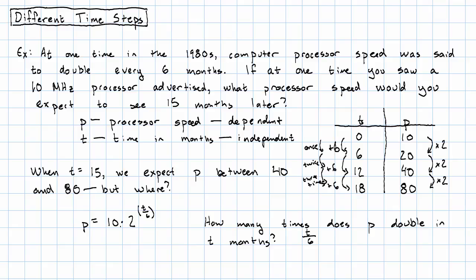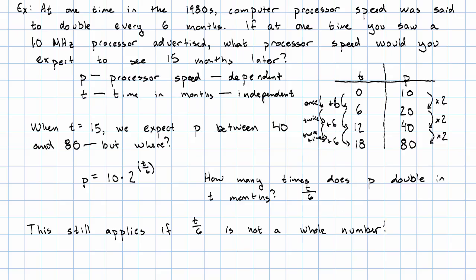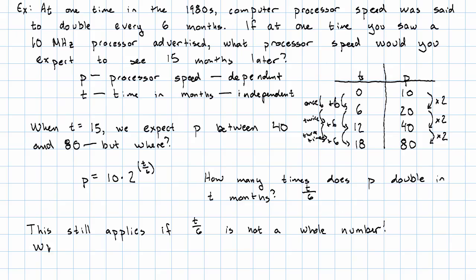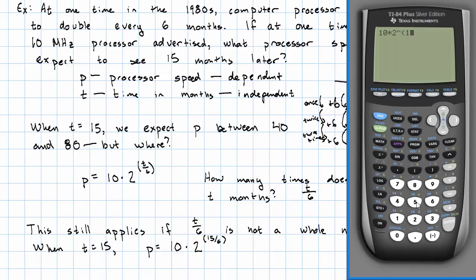And that still applies if T is not a multiple of six. So when T equals 15, P is 10 times 2 to the 15 over six. On the calculator, we definitely want to put 15 over six in parentheses.